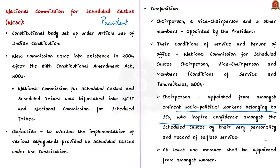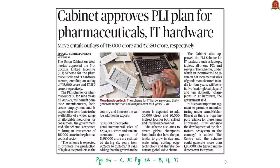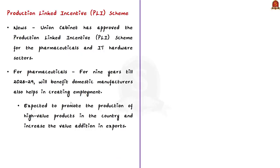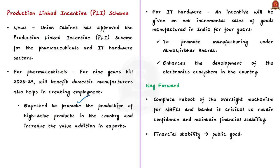This article is with reference to the PLI scheme for pharmaceuticals and IT hardware. The union cabinet has approved the Production Linked Incentive scheme for pharmaceuticals and IT hardware sectors. The PLI scheme for pharmaceuticals will run for nine years till 2028-29. It will benefit domestic manufacturers, help in creating employment, promote the production of high-value products in the country, and increase value addition in exports.